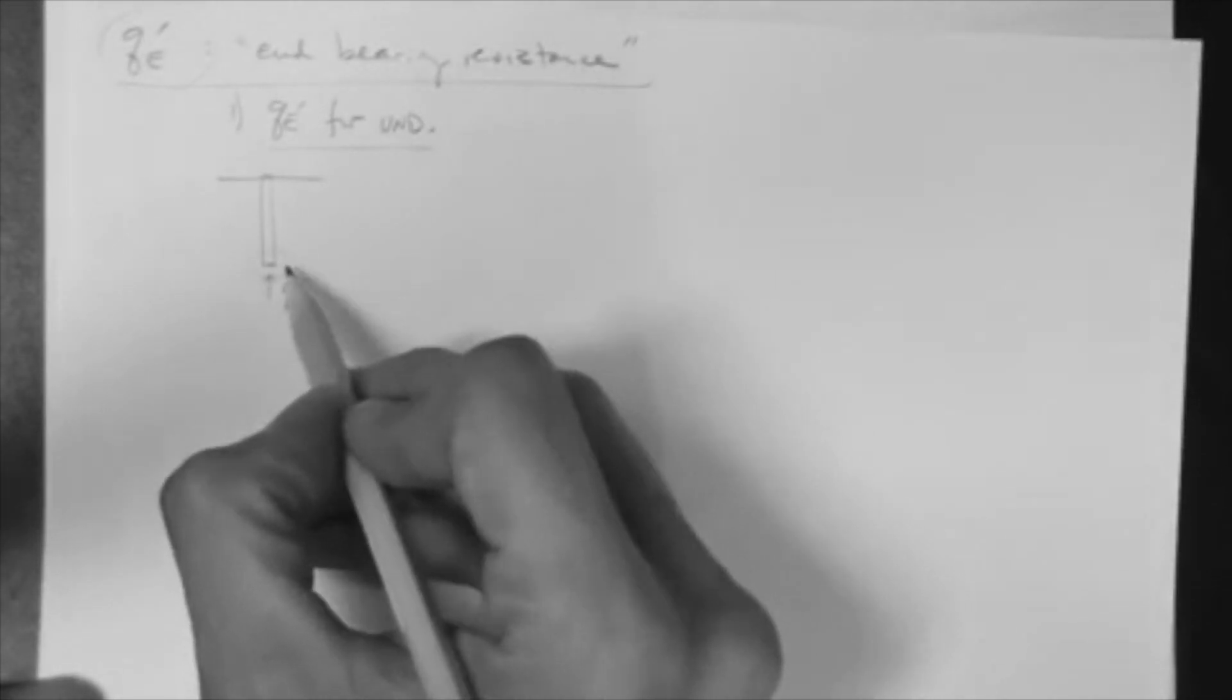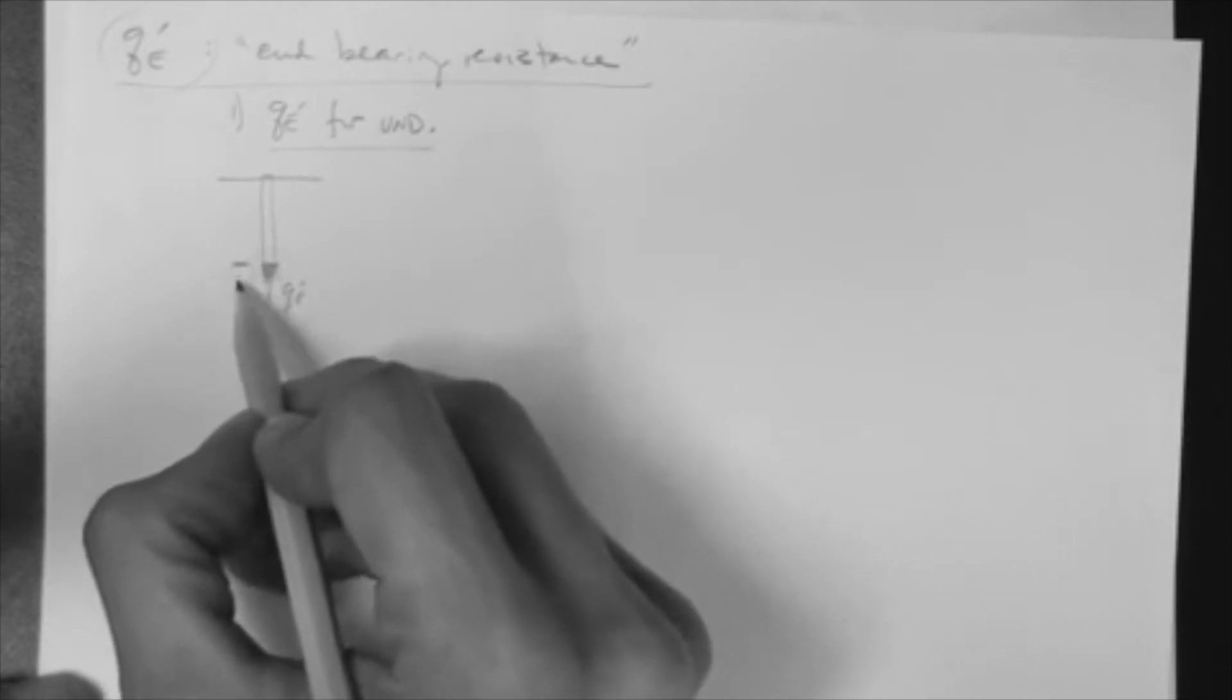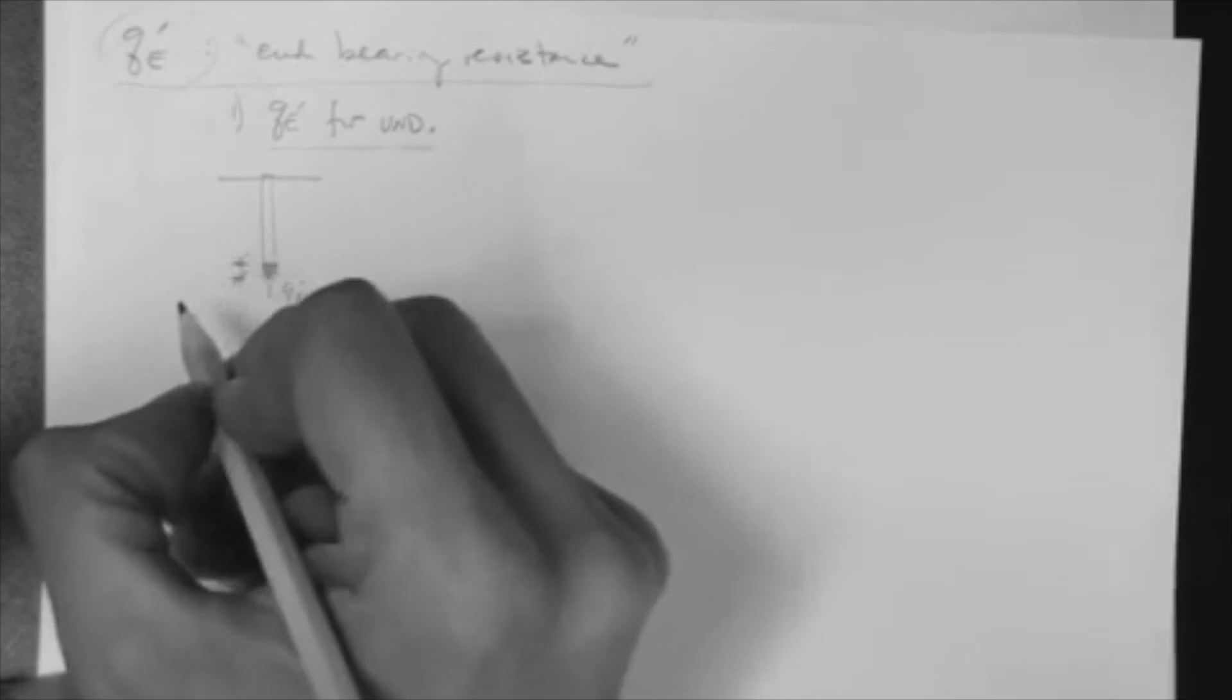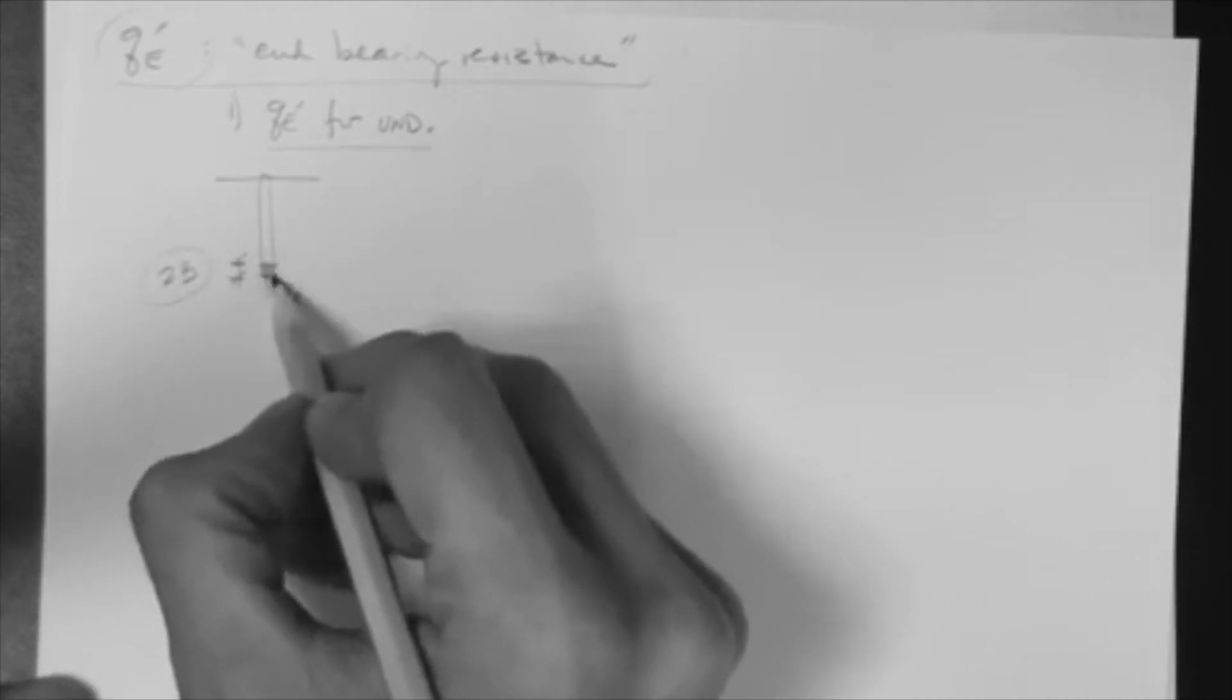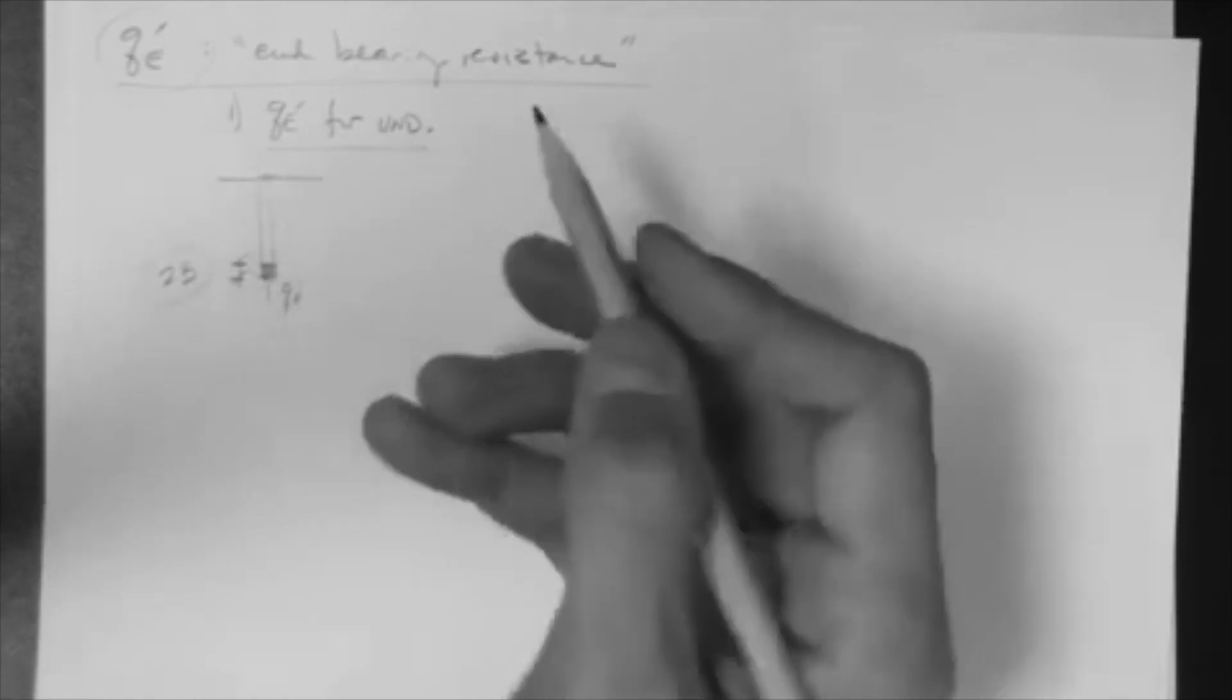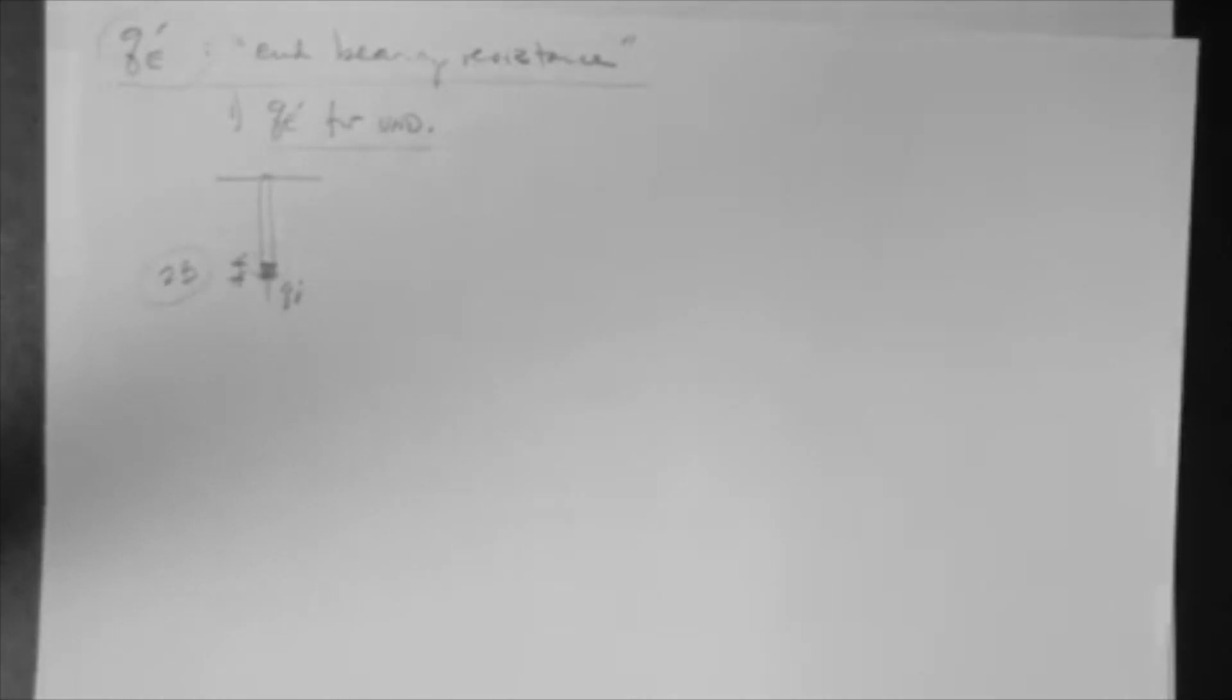So, whatever the soil is down here, in fact, this zone is 2b below the base. Now, B for a pile, generally, is not that large, unless you have a very large pile.